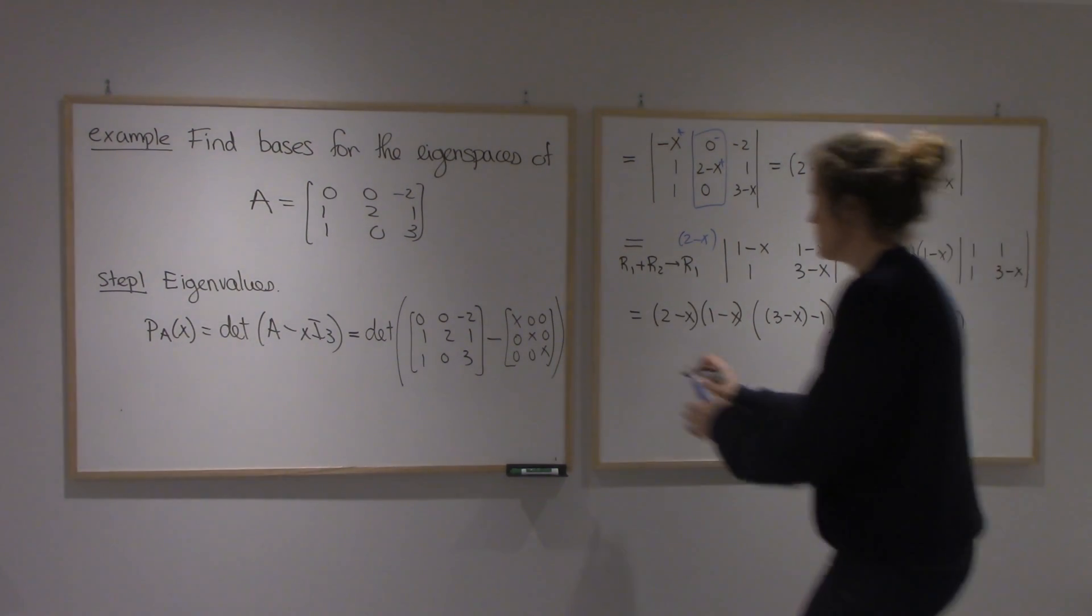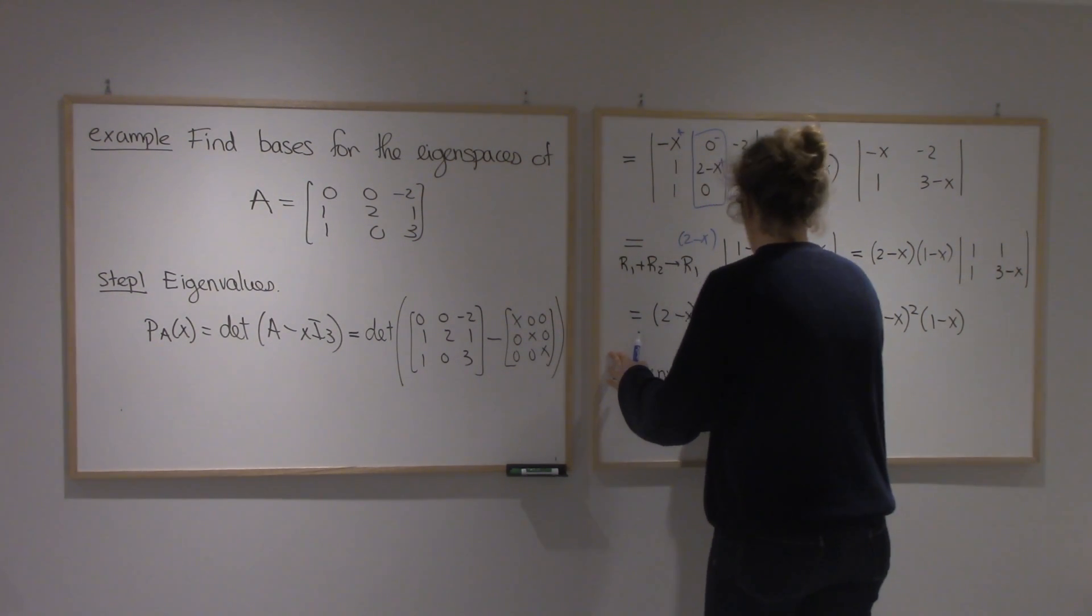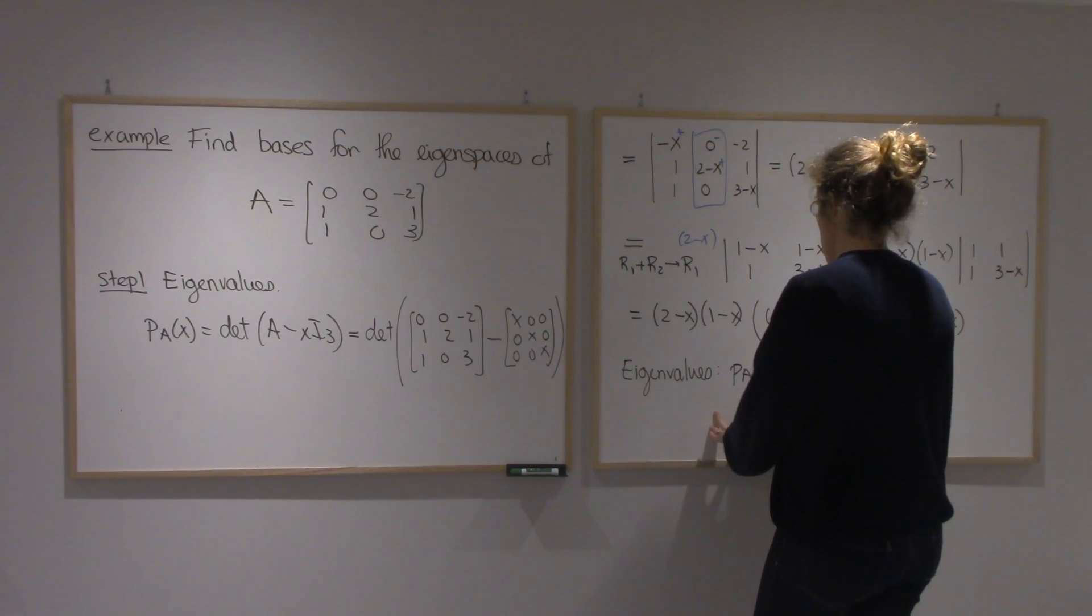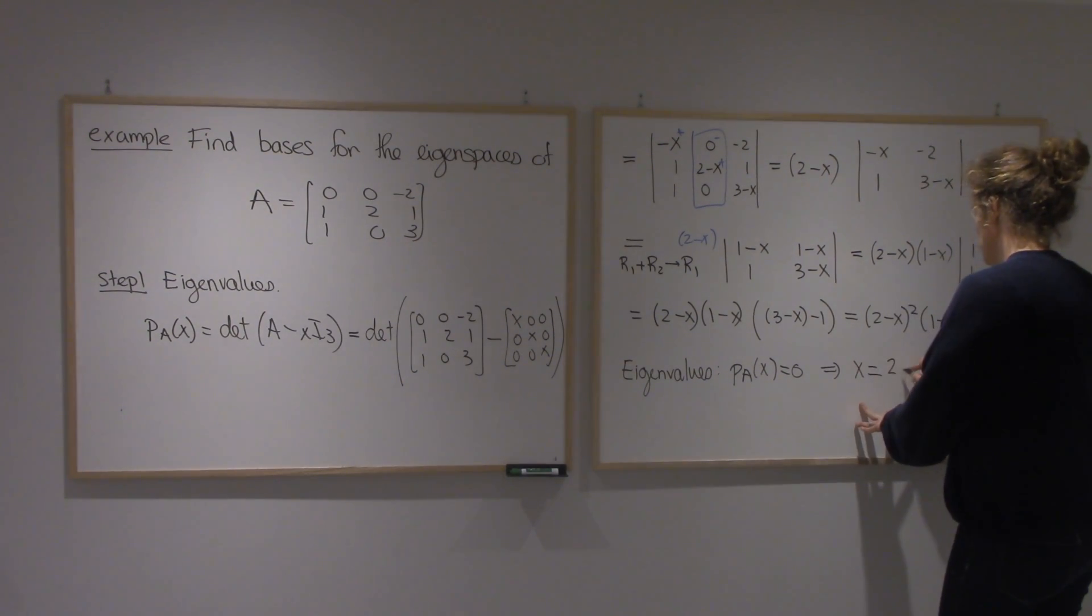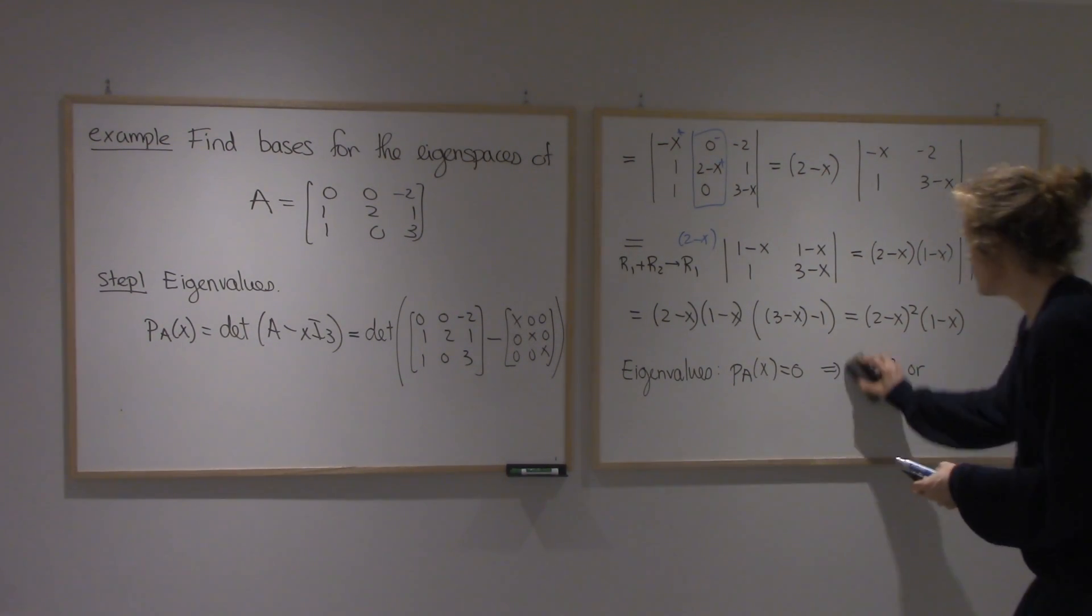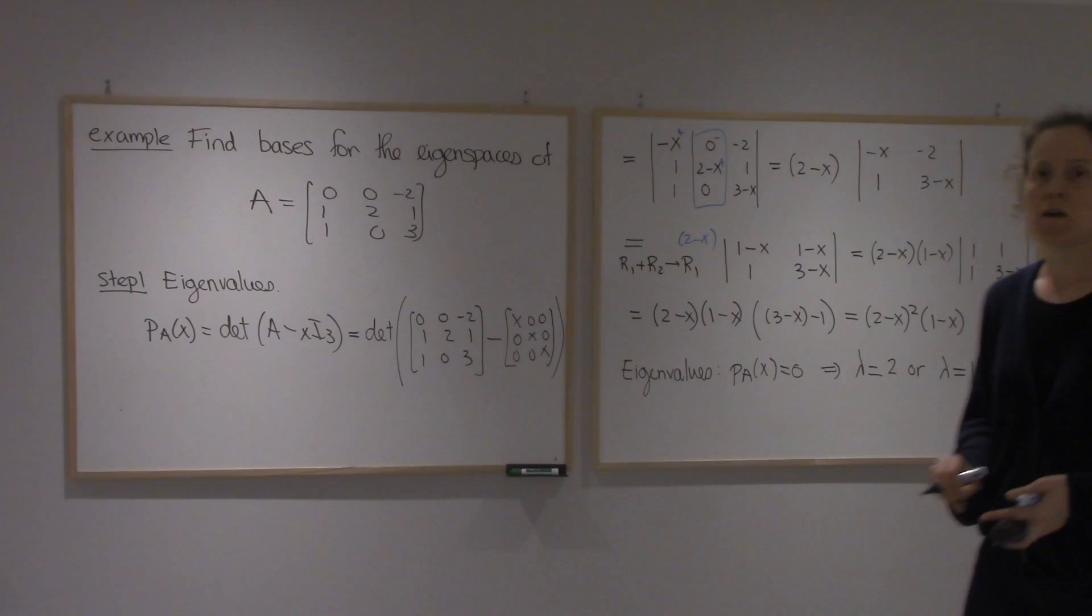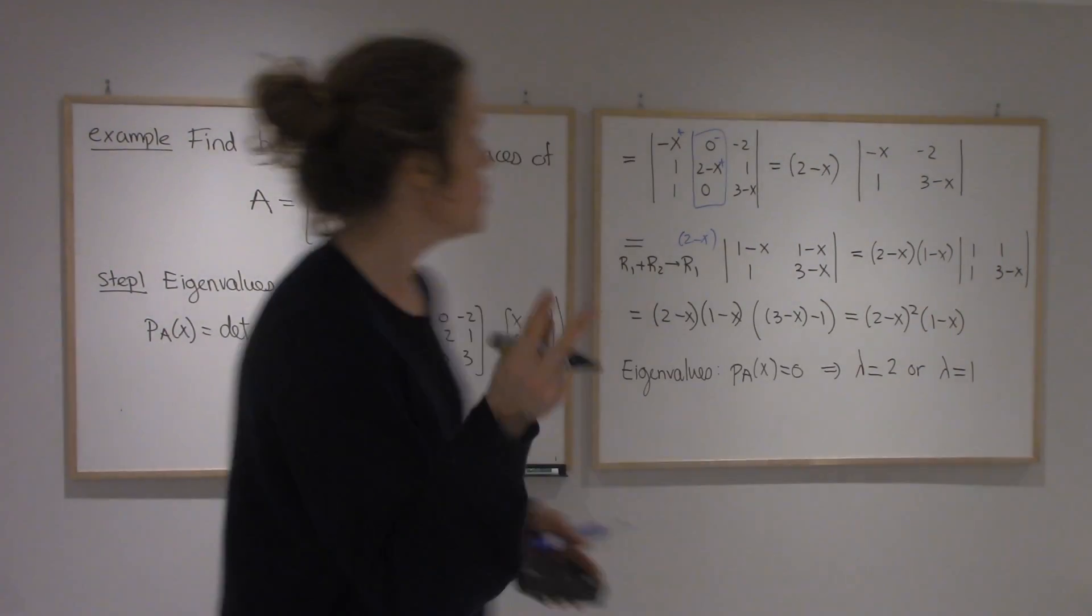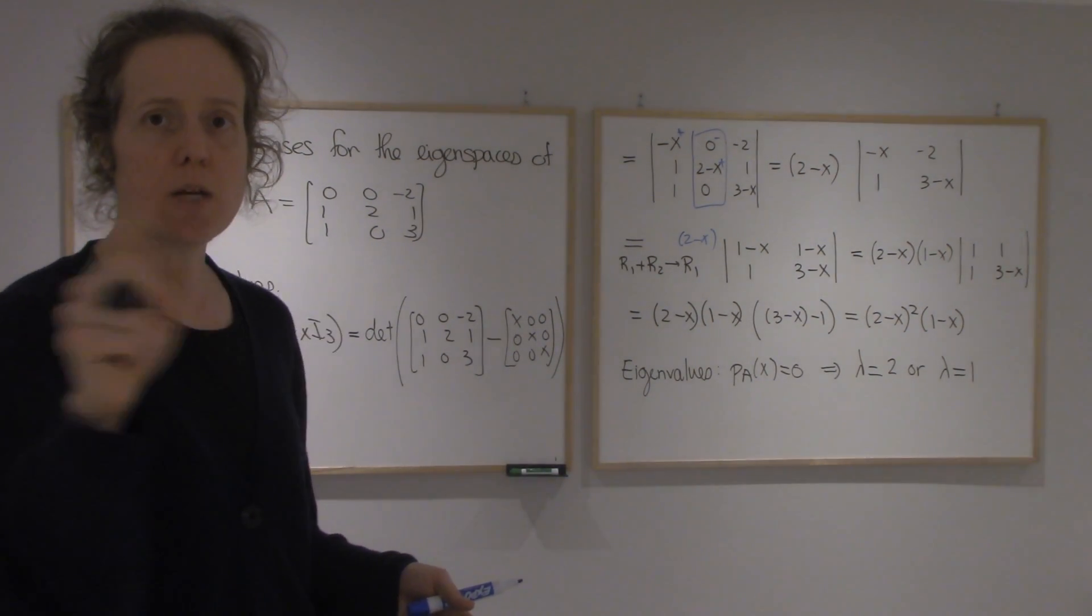So my eigenvalues will be when p of A of x is 0. So I get x equals 2. Sorry, I'm going to try to use lambda for eigenvalues and x for the polynomial. Lambda equals 2 or lambda equals 1. Alright, so we have 2 eigenvalues. That means we have 2 different eigenspaces, and I'm going to need a basis for each.